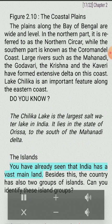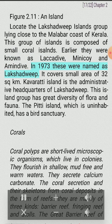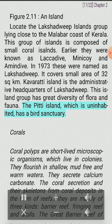India has two groups of islands besides its vast mainland. The Lakshadweep Islands group lies close to the Malabar coast of Kerala. This group of islands is composed of small coral islands. Earlier they were known as Laccadive, Minicoy and Amindivi. In 1973 these were named Lakshadweep. It covers a small area of 32 square kilometers. Kavaratti Island is the administrative headquarters of Lakshadweep. This island group has great diversity of flora and fauna. The Pitti Island, which is uninhabited, has a bird sanctuary.